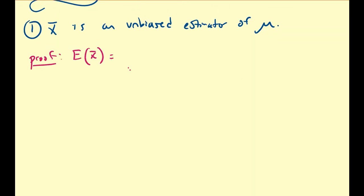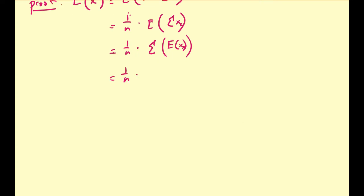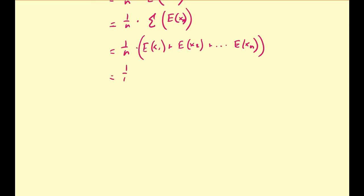The expected value of X-bar equals the expected value of 1 over n times the sum of the X values. We can factor out that 1 over n outside the expected value, giving the expected value of the sum of X. This equals 1 over n times the sum of the expected values of X_k, by interchanging sum and expectation. That gives us the expected value of X₁ plus the expected value of X₂, all the way down to the expected value of X_n. Each of these values comes from the same population, so they all have the same mean, namely mu. The n's cancel, leaving us with mu.